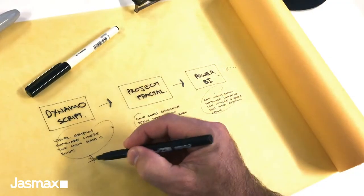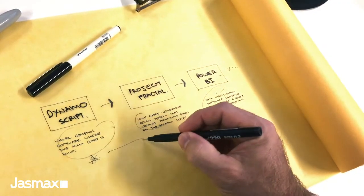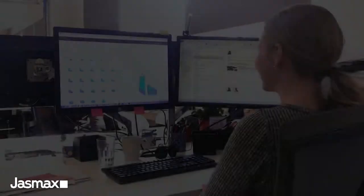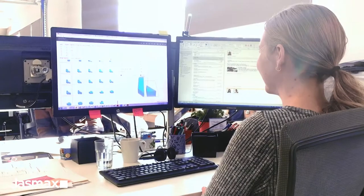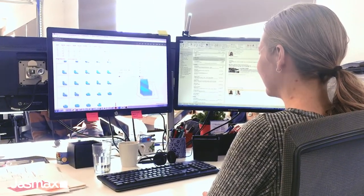It's a three-step process. Firstly, we're building a script in Autodesk's Dynamo. We're then pairing this with Autodesk's Project Fractal to generate hundreds or thousands of design options.